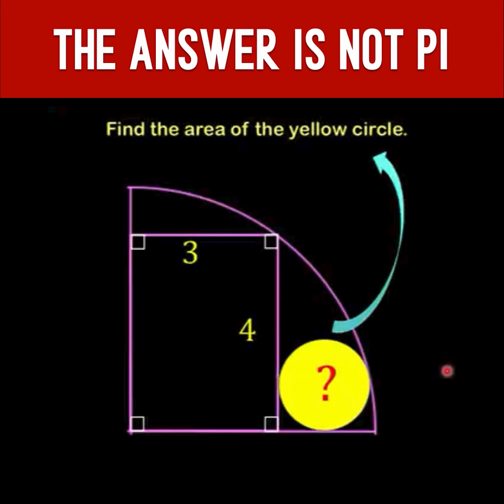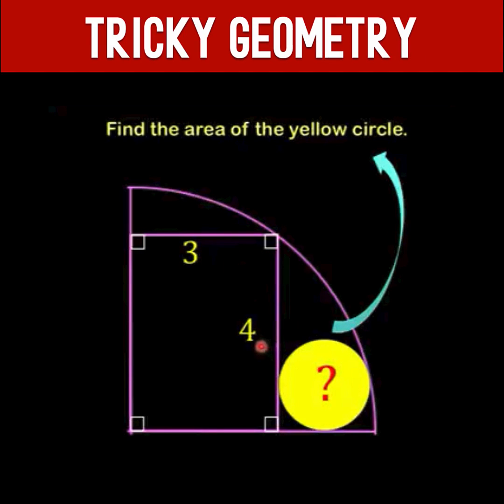What we are given here is a quarter circle and inscribed in that quarter circle is this rectangle. Its width is three units and its height is four units and we have here this yellow circle that is tangent to the rectangle and the radius and circumference of the quarter circle.